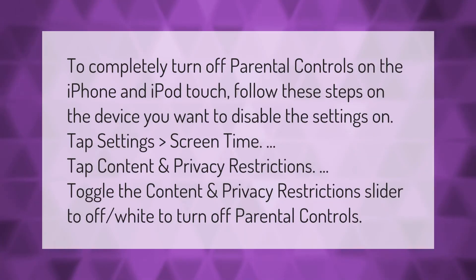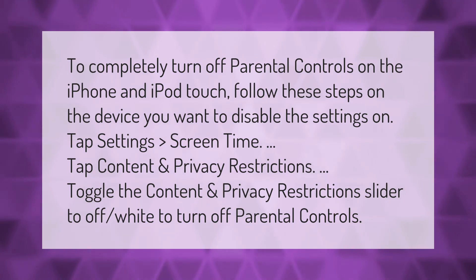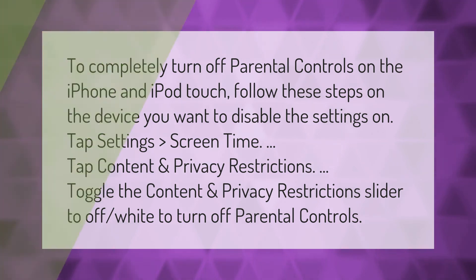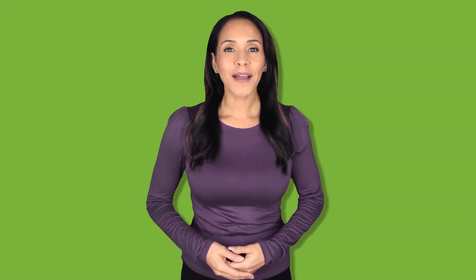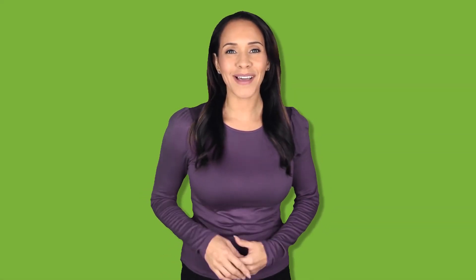To completely turn off parental controls on the iPhone and iPod Touch, follow these steps. On the device you want to disable the settings on, tap Settings, then Screen Time, then Content and Privacy Restrictions. Toggle the Content and Privacy Restrictions slider to off (white) to turn off parental controls. Thank you for watching — please subscribe and hit the bell notification.